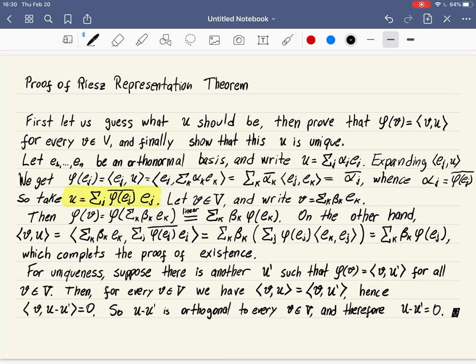Here is a proof of the Riesz Representation Theorem. We have to prove that this and this are always the same. The proof will go as follows. First we guess what U should be, then prove that it satisfies this property for every V, and finally we show that there is no other U with this property. So there's three parts in the proof.